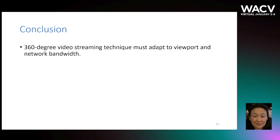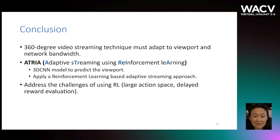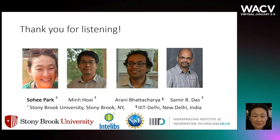In conclusion, for bandwidth-efficient streaming of 360-degree videos, the streaming technique must adapt both to the changing viewport and network conditions. We develop ATRIA, which uses a 3D-CNN model to predict the viewport and applies a reinforcement learning-based adaptive streaming approach. We address the challenges of using reinforcement learning in this scenario. Our comprehensive evaluation with real network traces shows that ATRIA is a much more agile streaming technique that adapts well to the changing network and user viewport, and outperforms state-of-the-art techniques. For more details, please refer to our paper. Thank you for listening.